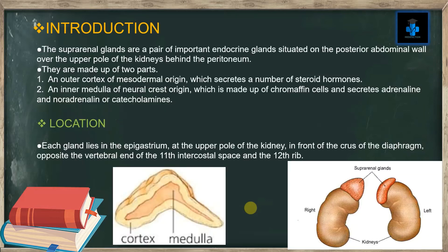Introduction: The suprarenal glands are a pair of important endocrine glands situated on the posterior abdominal wall over the upper part of the kidneys, behind the peritoneum. They are made up of two parts: an outer cortex, which is of mesodermal origin and secretes a number of steroid hormones, and an inner medulla, which is of neural crest origin, made up of chromaffin cells, and secretes adrenaline and noradrenaline, or catecholamines.